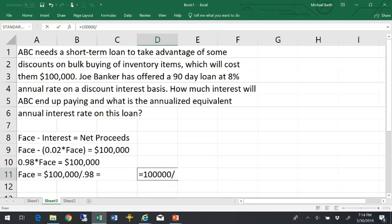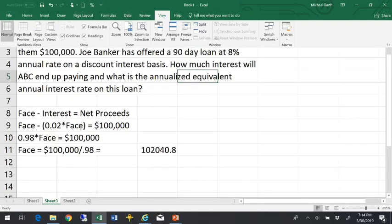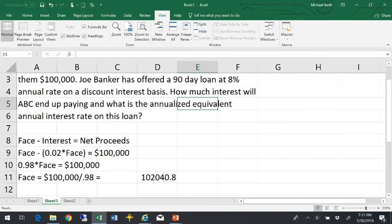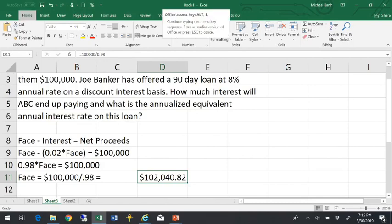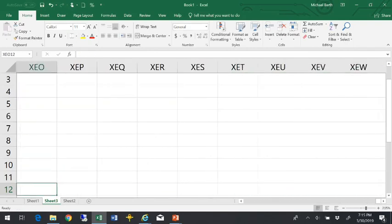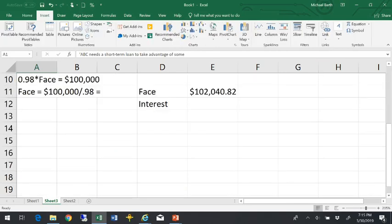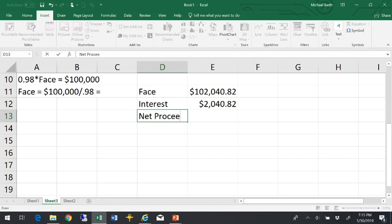So what they do is borrow or sign an IOU for $102,040.80. That would be the face amount, and that's what they'll pay back. The interest would be 2% of that amount, 0.02 times that. That's what the bank subtracts, and then the net proceeds would be $100,000.